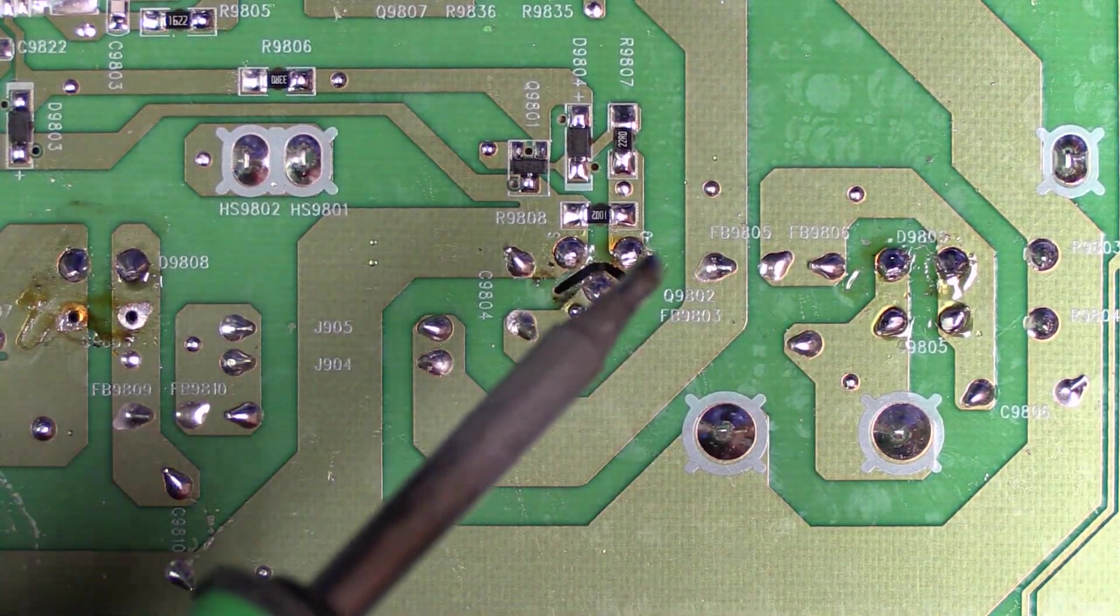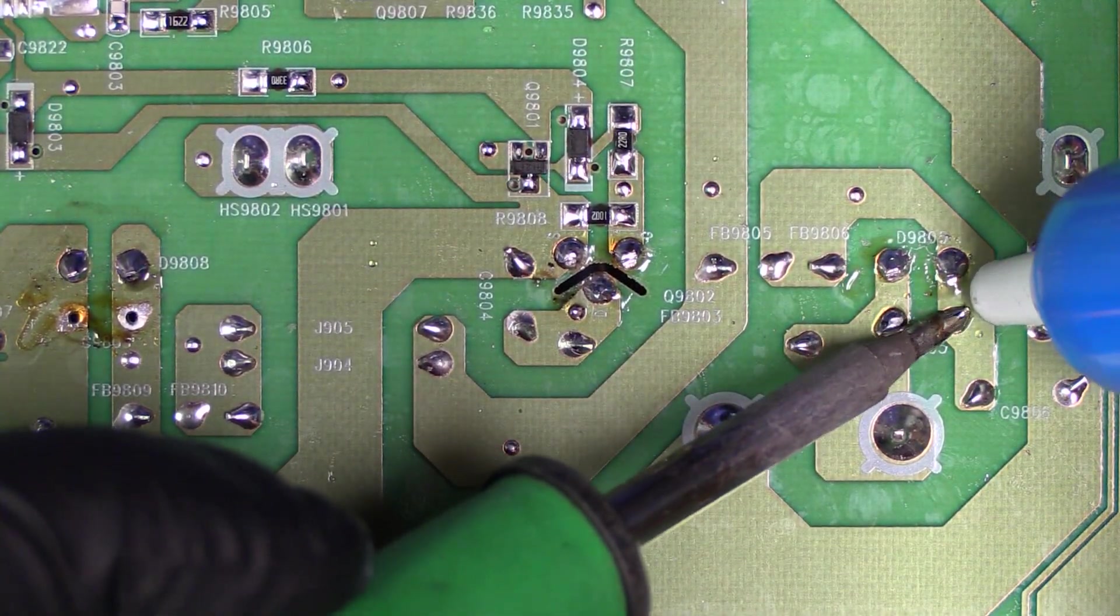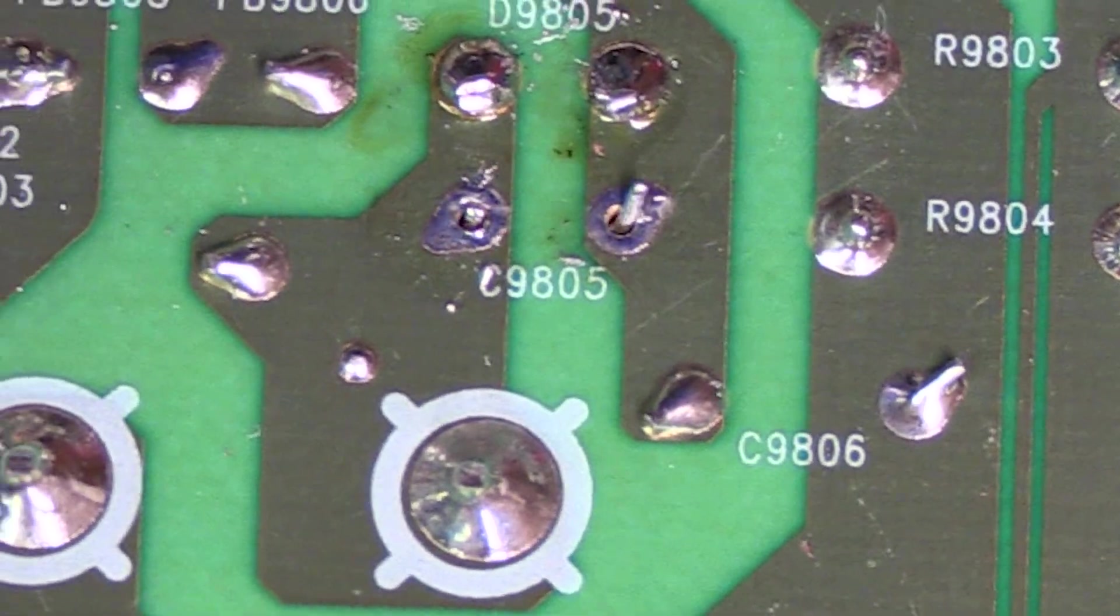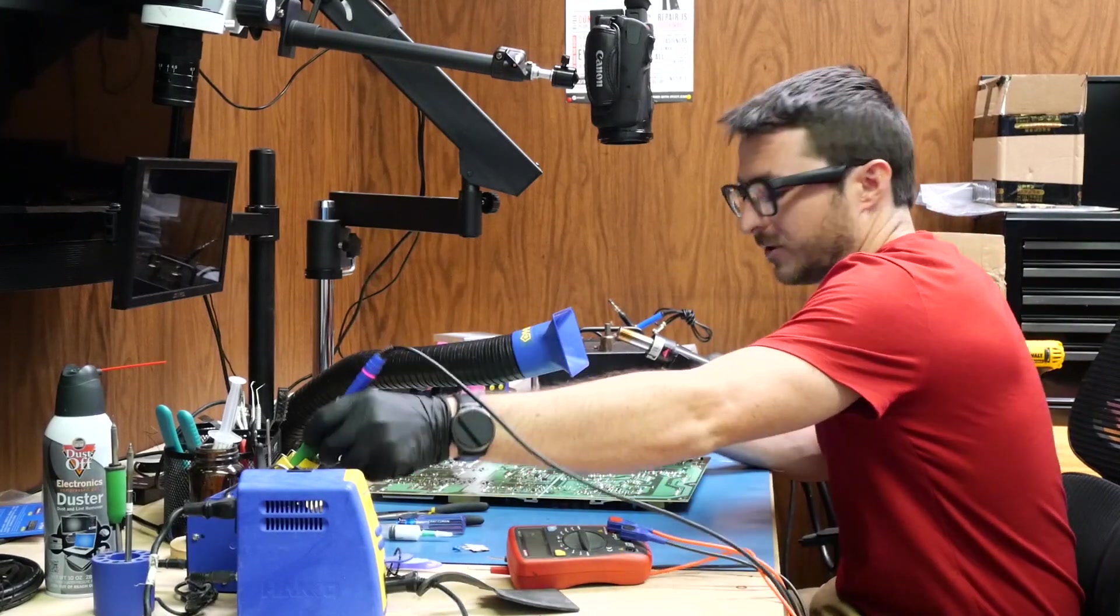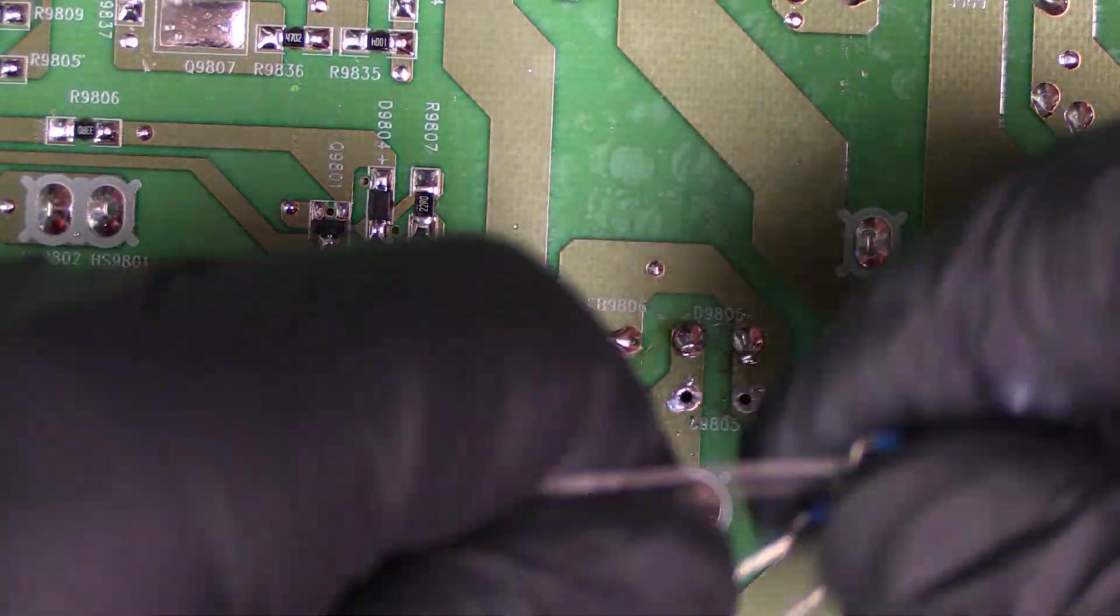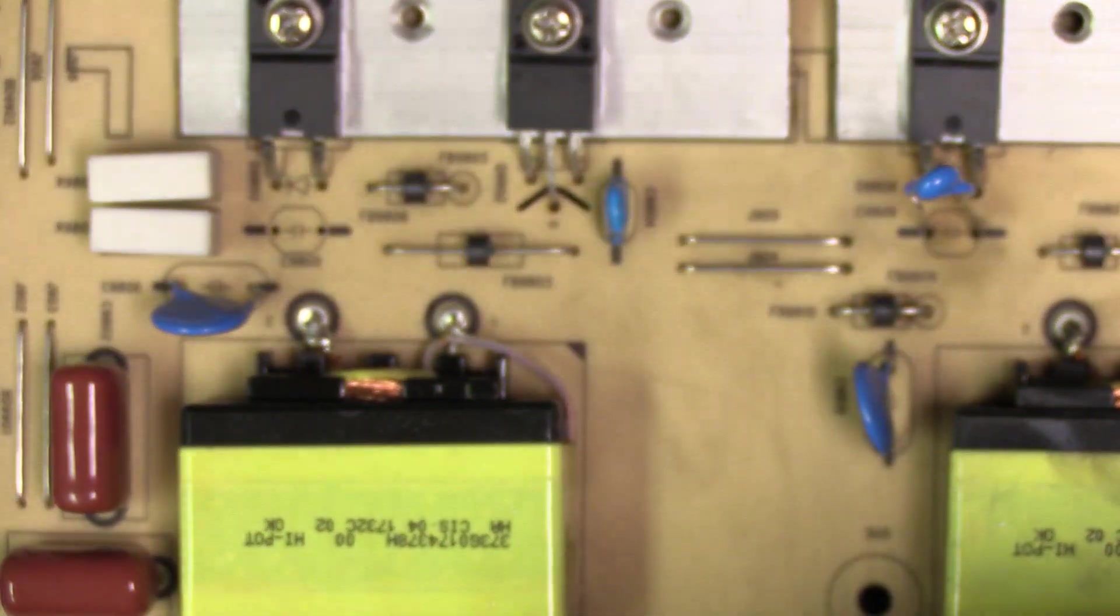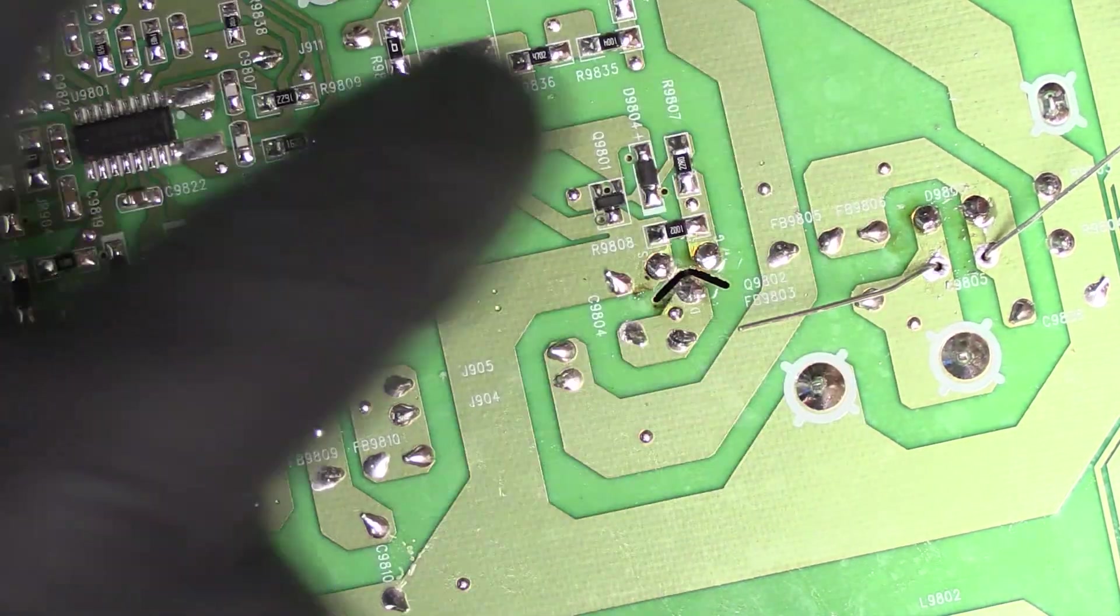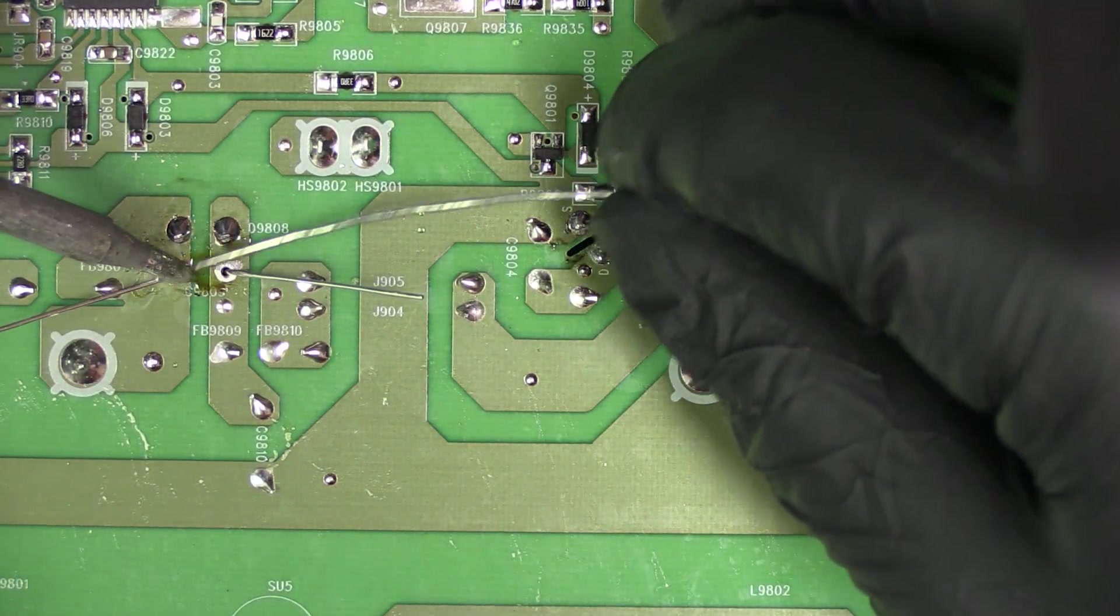This one's going to be a little harder to just push the legs through since there is a component on the other side. We'll use the desolder pump. The legs are moving. I just had to put a little more muscle to pull it through. These are my two replacements. These are ceramic so they don't have a polarity. I'm just going to bend the leads out so that the capacitor doesn't fall through. Now we'll solder them in.